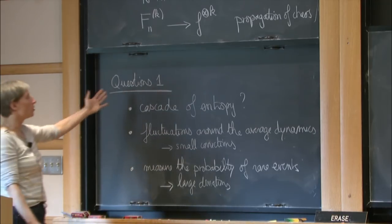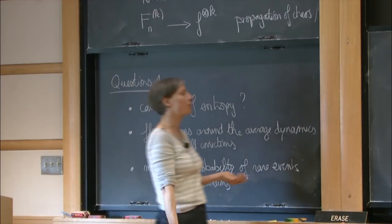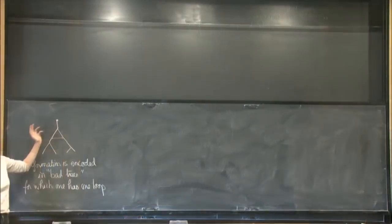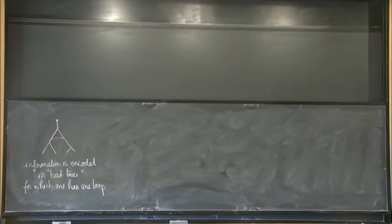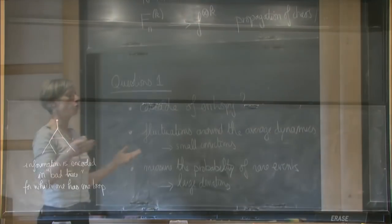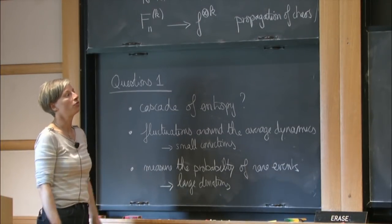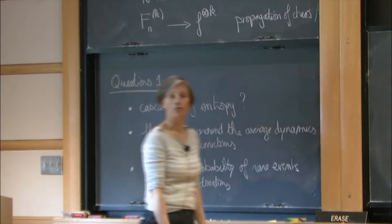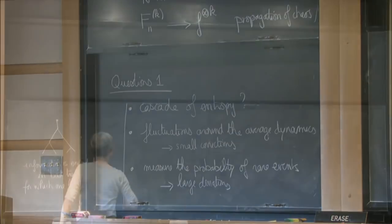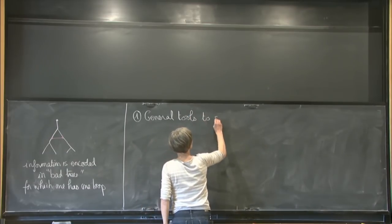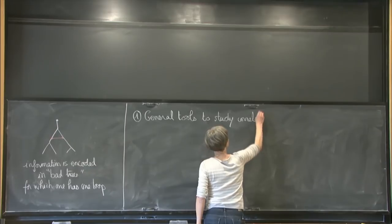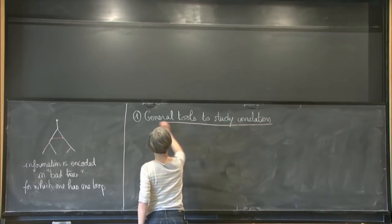To go beyond this very first approximation, you would like to characterize much more precisely these bad events — they don't happen very often, but still they can happen and we would like to understand the structure of these kinds of trees. To start with, I would like to introduce some very general tools from combinatorics or statistical physics to study this kind of correlations, and then show how to use them in the context of hard sphere dynamics.